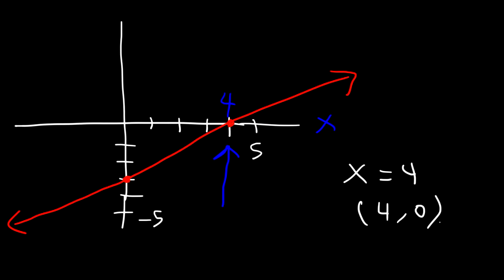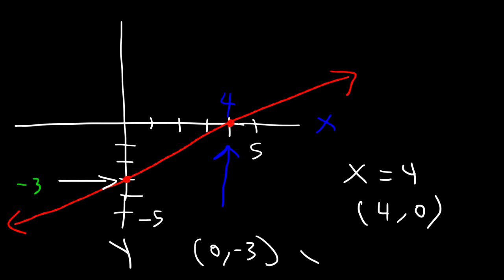What is the y-intercept in this particular graph? All you need to do is locate the y-value at which the graph touches the y-axis, and that y-value is negative 3. So I'm going to write it as (0, negative 3) as an ordered pair, or you could say y is equal to negative 3. That's how you can identify the x and y-intercepts from a graph.